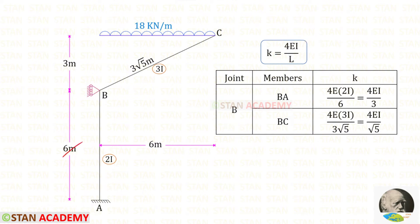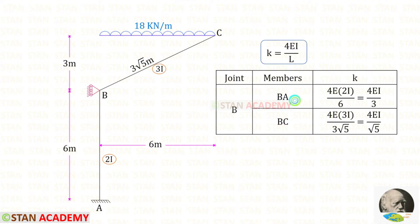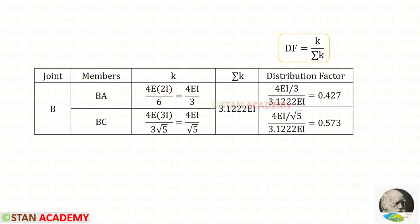The length of AB is 6 and the moment of inertia is 2I, so we apply 2I instead of I. The length of BC is 3 root 5 and the moment of inertia is 3I. For the stiffness of BA we will get 4EI upon 3, and for BC we will get 4EI upon root 5. Now let us find sigma K by adding these two values. Then using the distribution factor formula, we can find the distribution factors for each member.